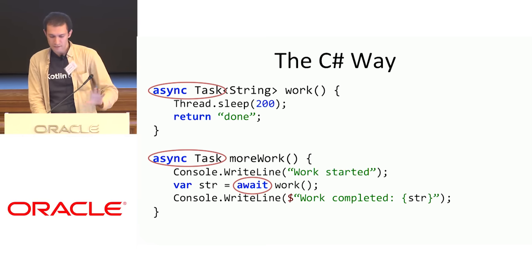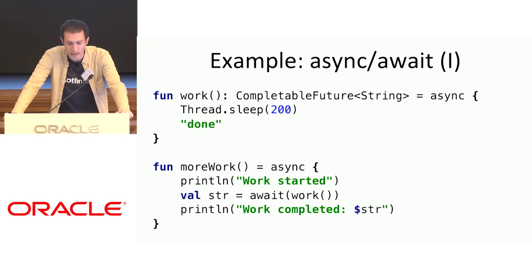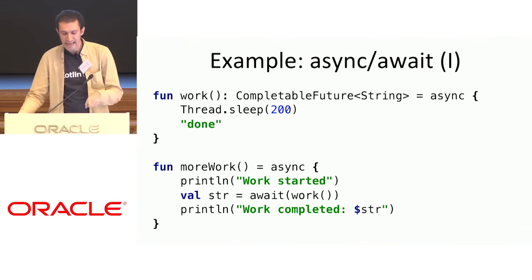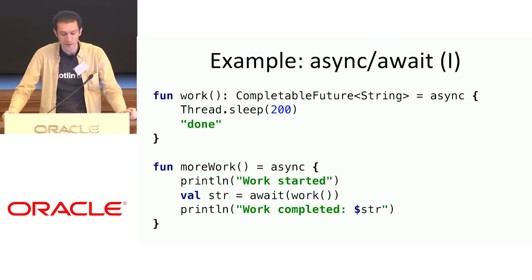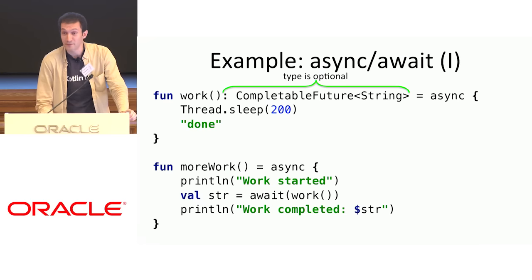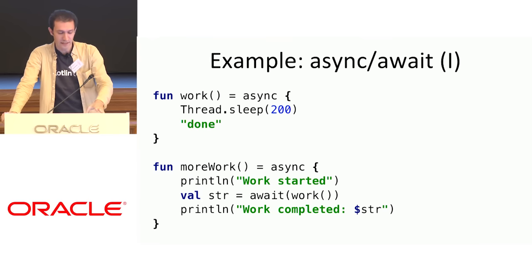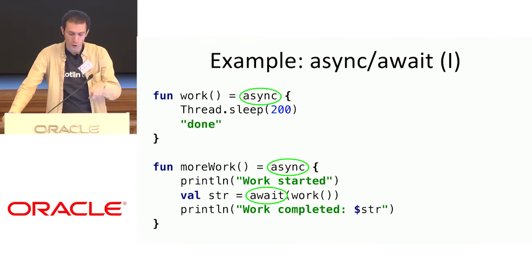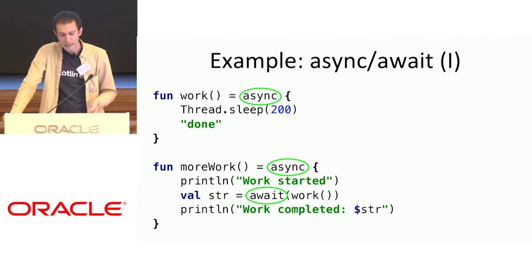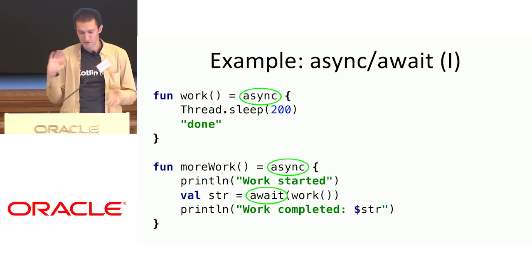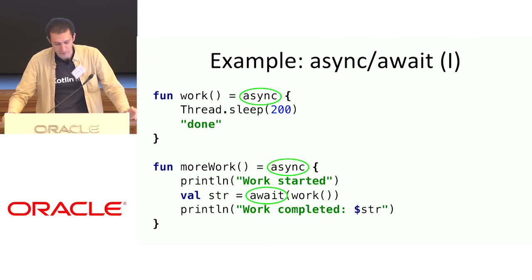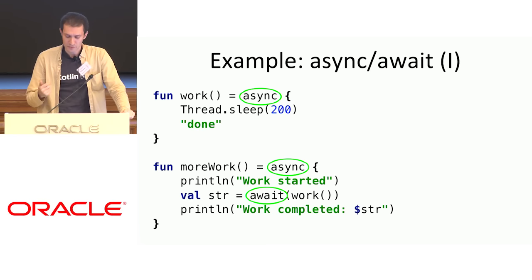In Kotlin, we try to go away from this and make it more flexible. My work function returns a CompletableFuture — that's just a decision for this particular library. My async on the right is actually a function that returns CompletableFuture. I have different kinds of async functions for different sorts of futures. Syntactically, all I did is move async from the left to the right, but importantly, all those are points of flexibility: async is a library function, await is also a library function, and I could have different overloads with different semantics.